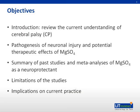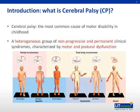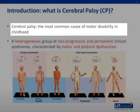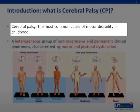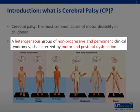In this article, neuroprotection of magnesium sulfate is studied using cerebral palsy as the neurological disease model. The discussion today has the following objective. First of all, let's recap what is cerebral palsy. It is the most common cause of motor disabilities in childhood. It is a heterogeneous group of non-progressive clinical syndromes characterized by motor and postural dysfunction.